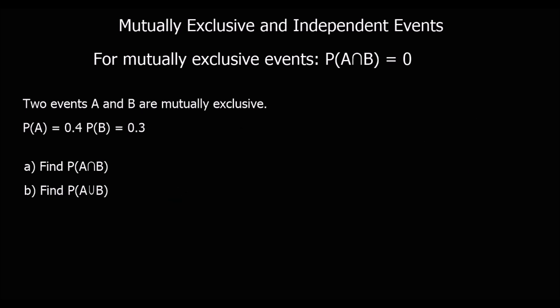Here's another question on mutually exclusive events. So mutually exclusive: A and B have zero chance of happening together. The union of A and B is just the probability of A plus the probability of B, so 0.7.